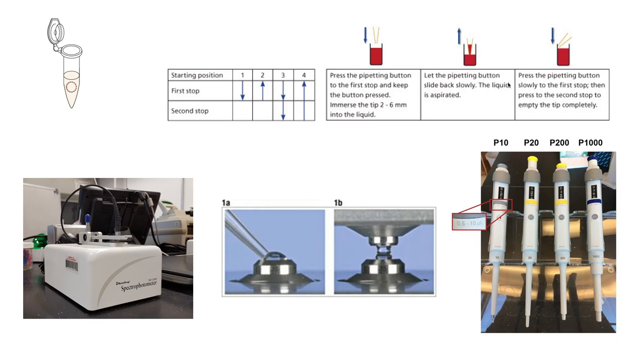The NanoDrop has a little pedestal, shown here zoomed in, and we want to make sure that when we pipette, we end up with our liquid on top of this pedestal. We will then bring the arm of the instrument down, press down, and then release. When we're done, we should have a column of liquid formed. Before you measure your sample, you want to make sure that you have this liquid column formed. Otherwise, you will have an inaccurate reading.